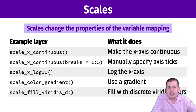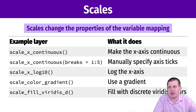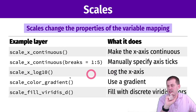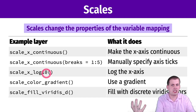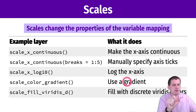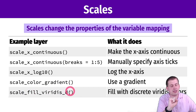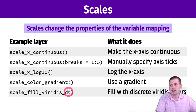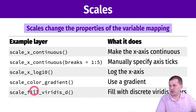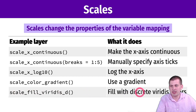Scales change the properties of how a variable is mapped. We saw that with the gapminder plot using scale_x_log10 — we didn't change the data at all, we just told ggplot to log the x-axis. There's a scale for any aesthetic. If you have a color aesthetic, you can say scale_color_gradient to use a gradient scale. If you want the viridis palette — which is perceptually uniform and better for colorblind viewers — you just tell ggplot to use it and it handles the mapping for you.